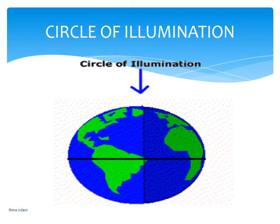The circle that divides the day from night on the globe is known as the circle of illumination. The earth takes about 24 hours to complete one rotation on its axis. The period of rotation is known as the Earth day — this is the daily motion of the earth.